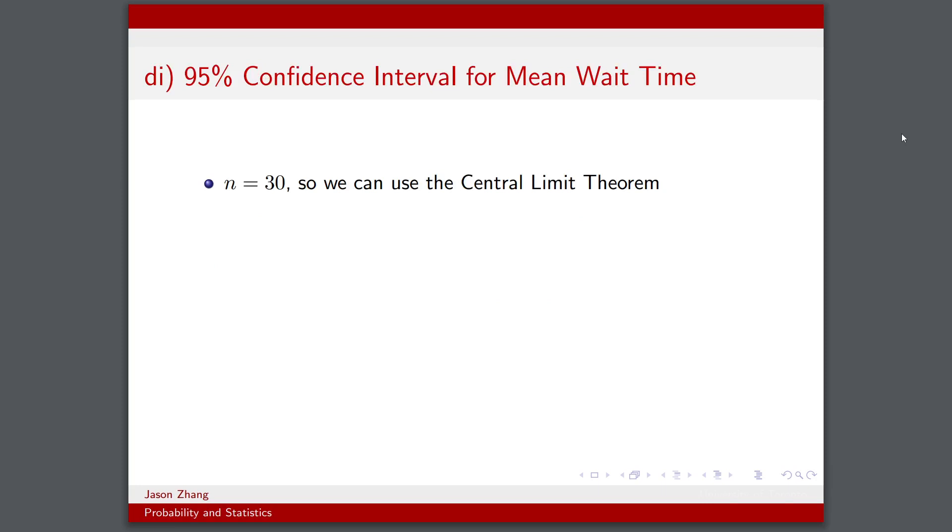So now for part 1 of part d, we want a 95% confidence interval for the true mean wait time. Remember that this is for a new bus stop, so we're no longer given the λ = 2 scenario. Here we're given that we have waited 30 days at a new bus stop. So our sample size is n = 30 days. And this is a large enough number where we can use the central limit theorem.